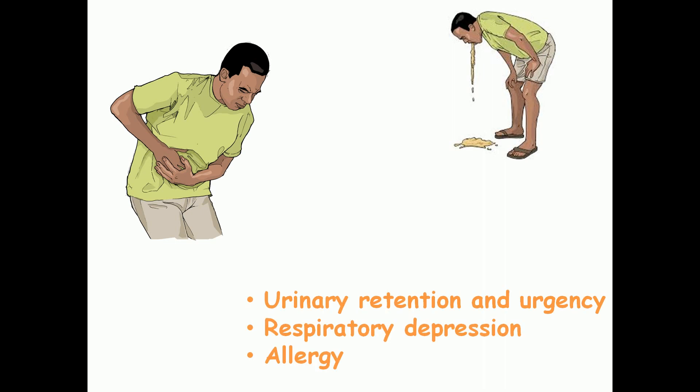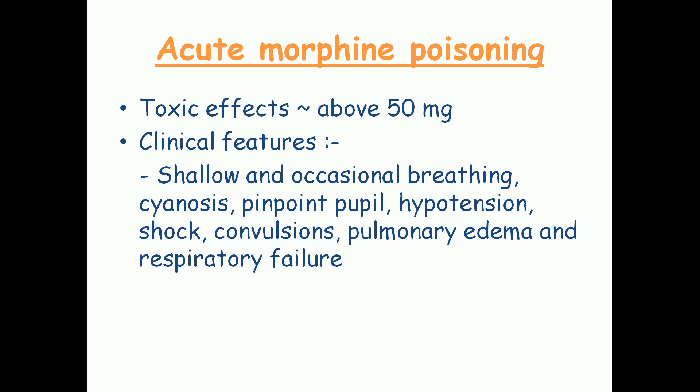The adverse effects of morphine include nausea, abdominal pain, constipation, vomiting, urinary retention and urgency, respiratory depression, and in a few cases, allergy.